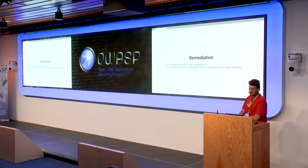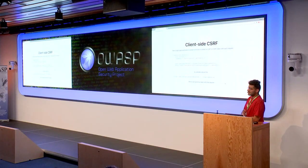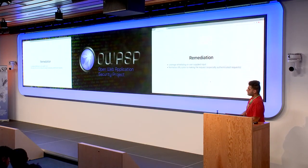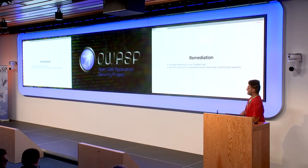So let's talk about remediation. If you were to rewrite that, you have to leverage whitelisting on user-supplied input. In that scenario you would double-check: is my user-supplied input from the location hash actually what I'm expecting? Is it an integer, or is it one of the strings in this expected array? And of course, you can normalize the URLs prior to making the request, especially for authenticated requests. That covers most of the common issues you would come across in React applications.